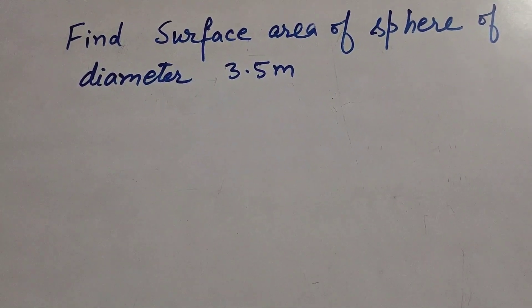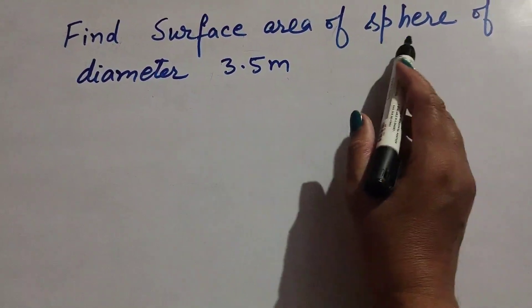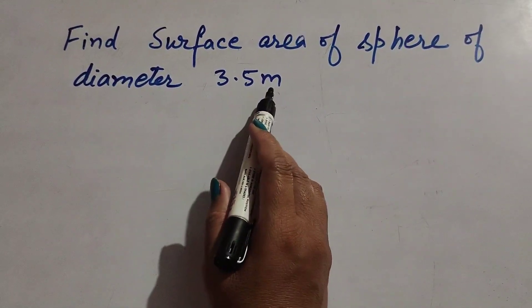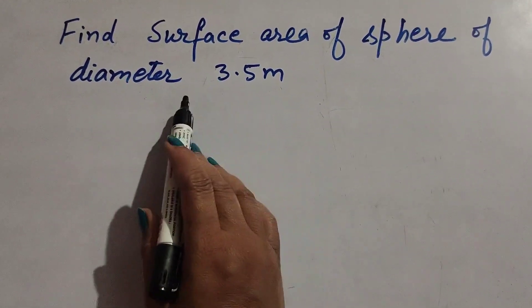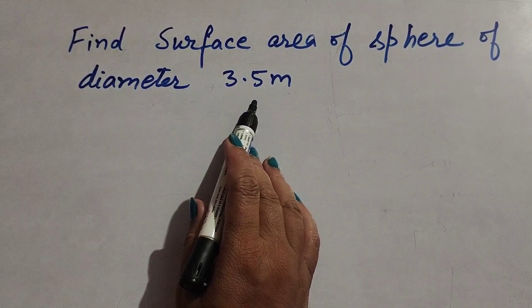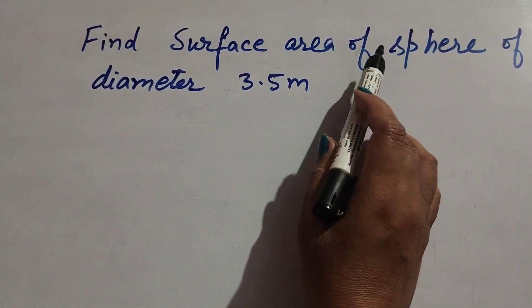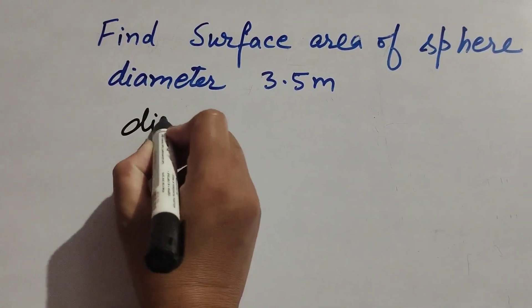Hello friends, welcome to my channel. In this video we discuss finding the surface area of a sphere of diameter 3.5 meters. In this question, the diameter of the sphere is given and we need to find the surface area of the sphere.